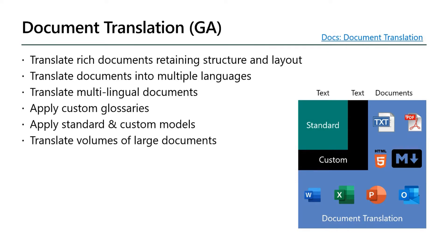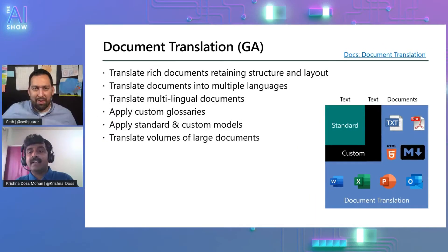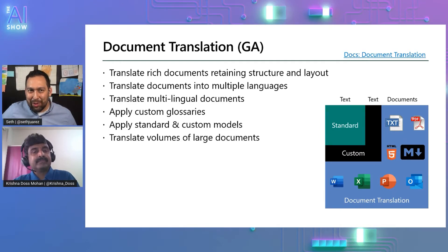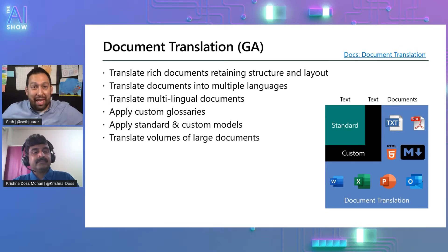You could also bring your own translation memory, which you have built over a period of time, and build custom models and use it to translate documents. Or if you have a simple problem, just create a simple custom glossary and apply it during document translation. This is really cool — it's literally the Swiss Army knife of translating stuff, but in situ, meaning in the actual document itself.